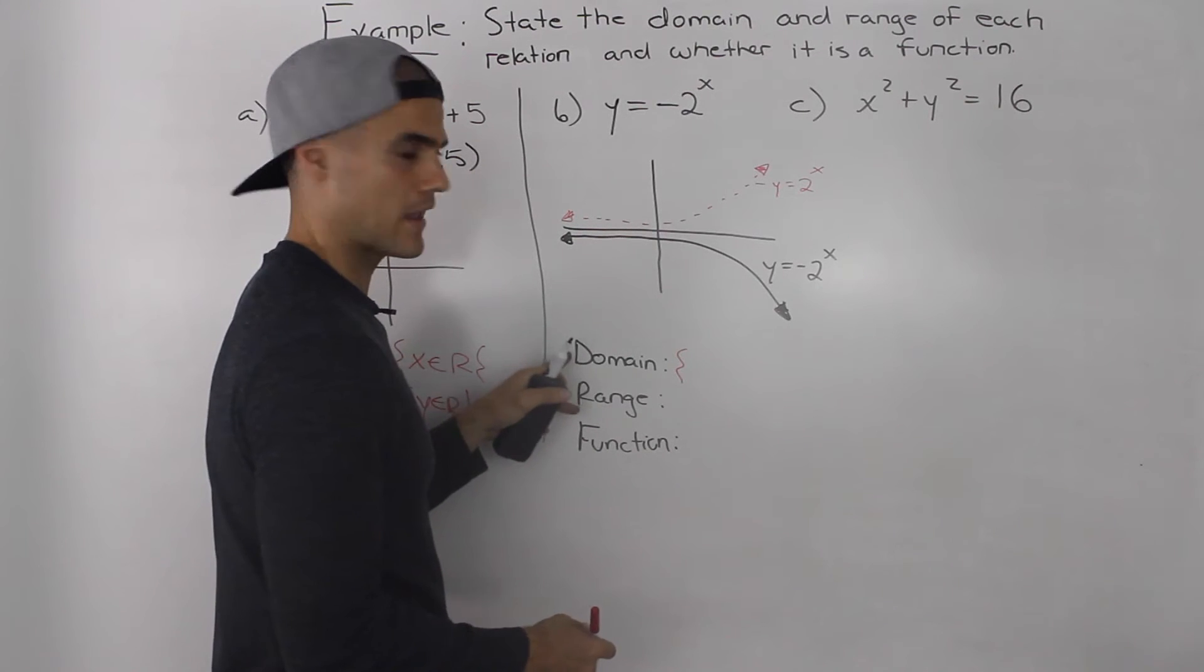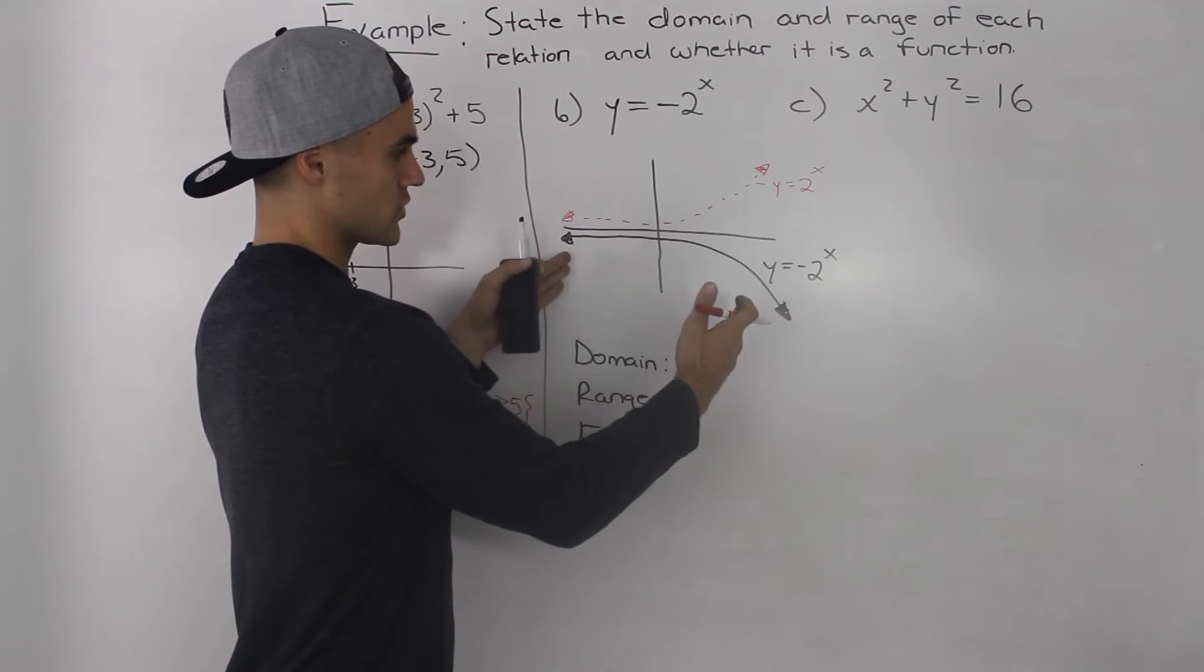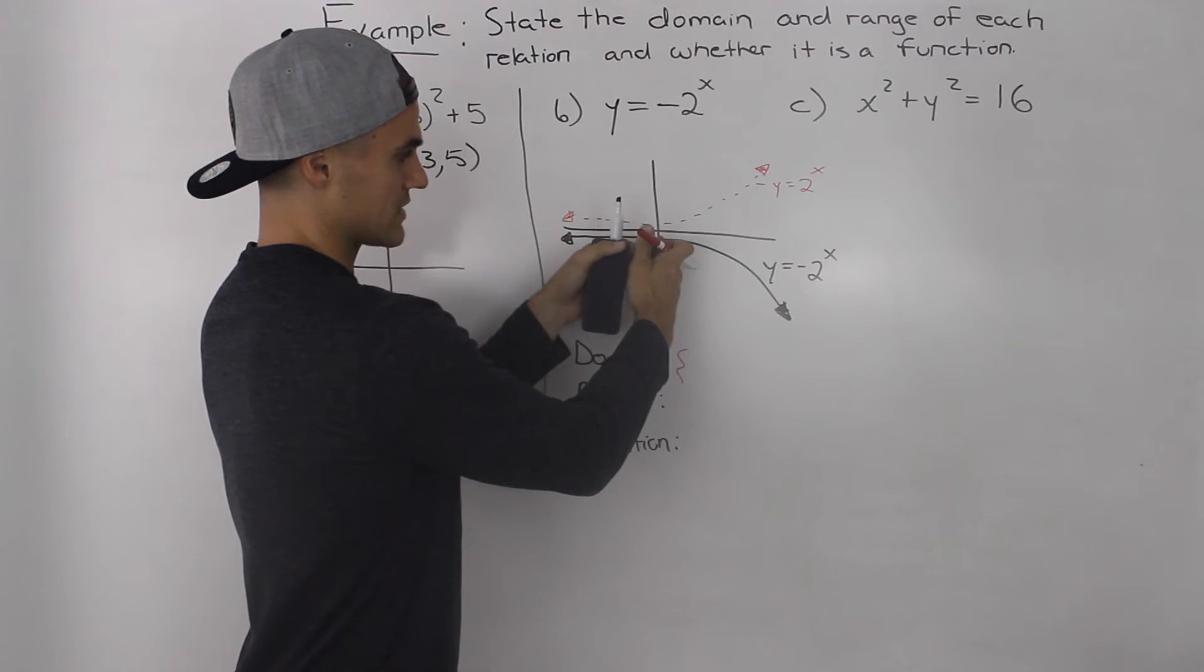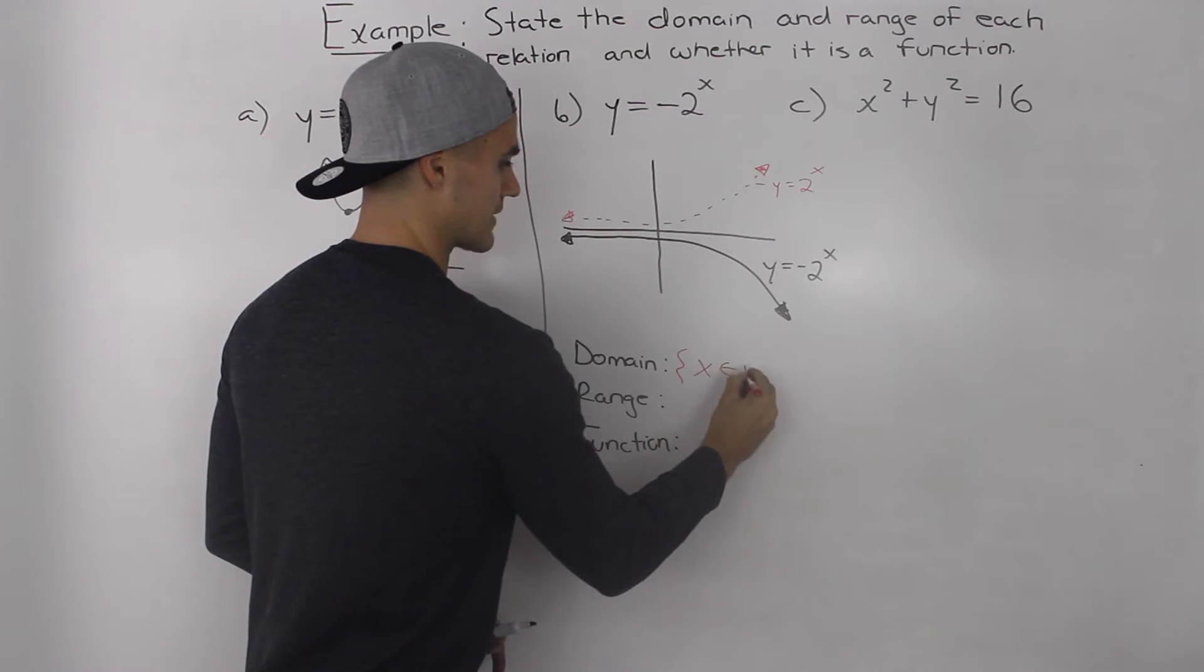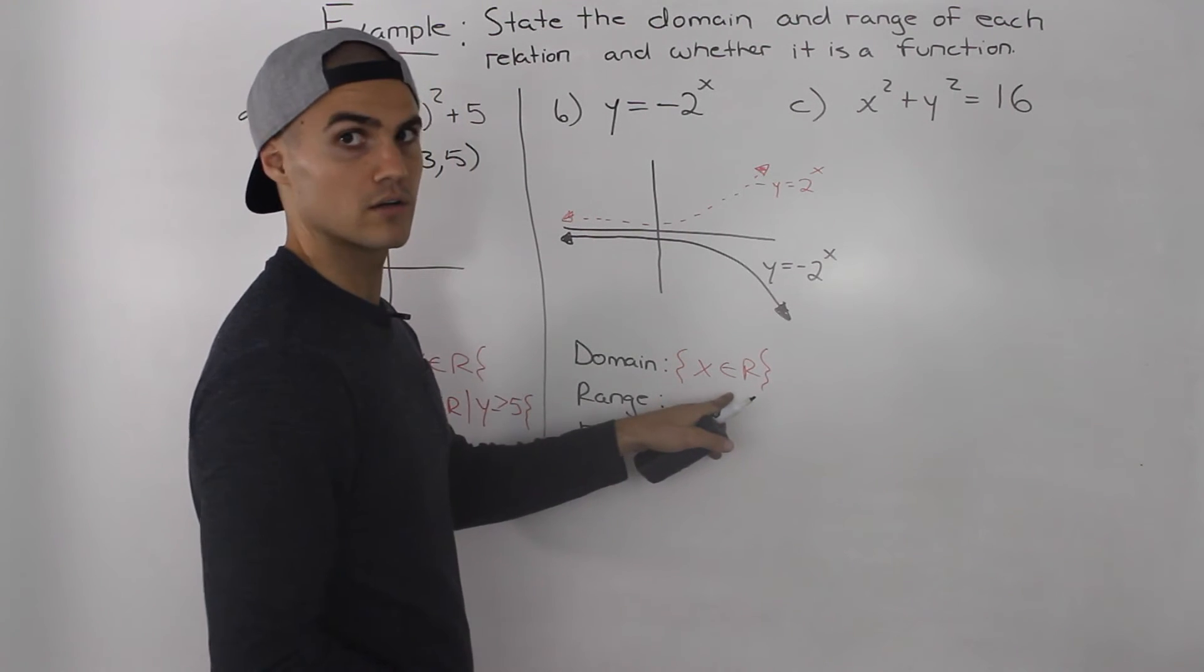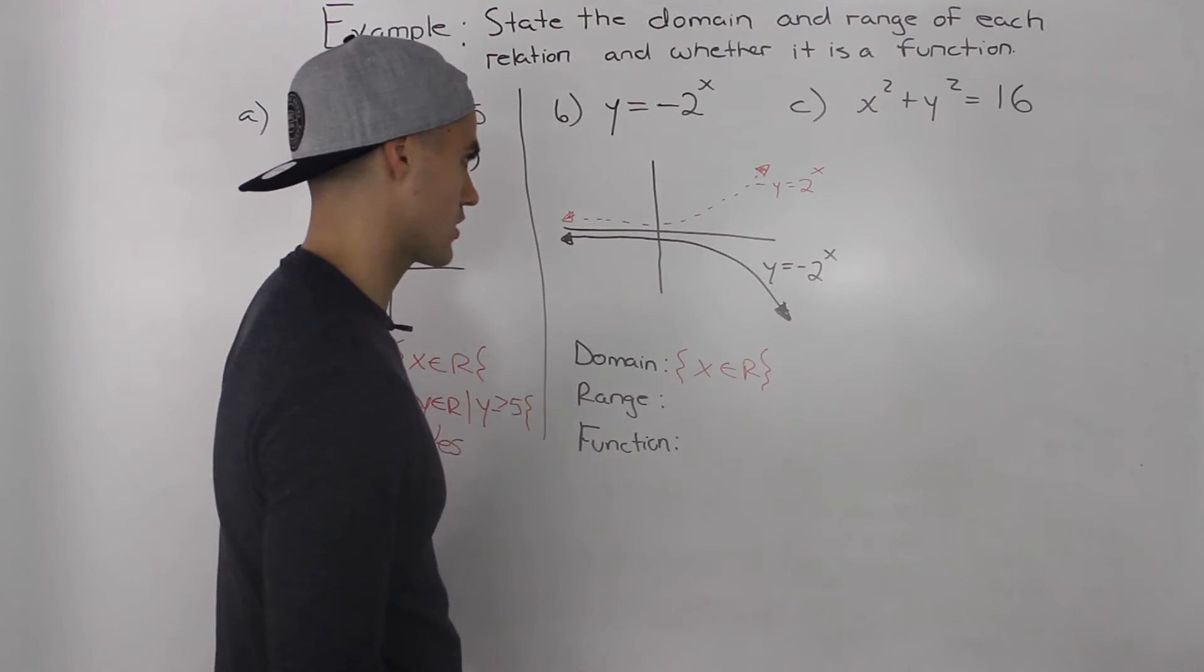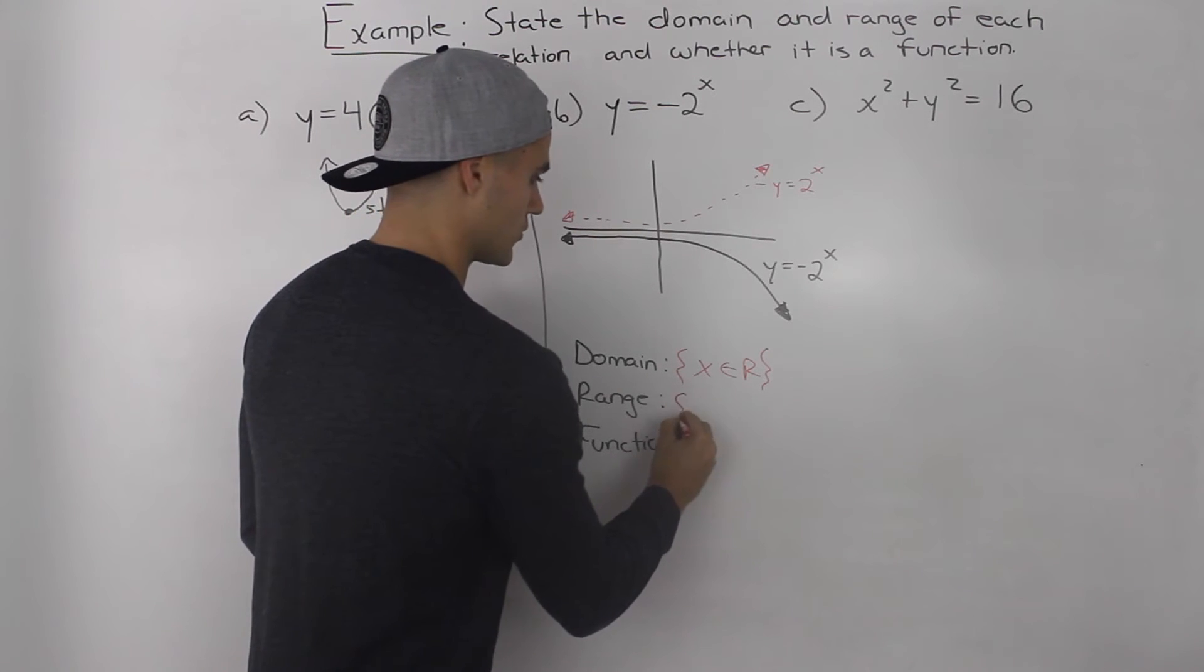So starting with the domain, there are no restrictions on the x values. The x values, there's an infinite amount. So the domain, x can be an element of real numbers. There's no restriction on them. Now, what about the range?